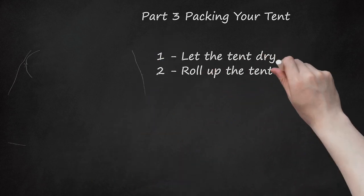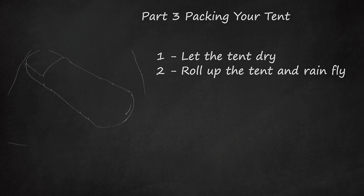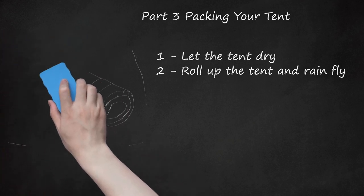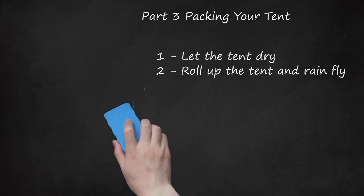2. Roll Up the Tent and Rainfly. Never fold a tent, as you would a shirt or a flag. To avoid folding creases into the tent, you want to stuff or roll them into the stuff sack included with the tent. This will help keep the tent solid and waterproof, making it an essential maintenance step in the life of the tent. Stuff in the tent and the rainfly into the stuff sack before you put anything else in.